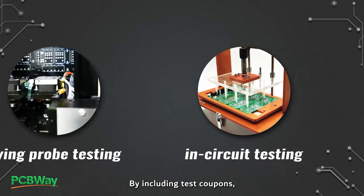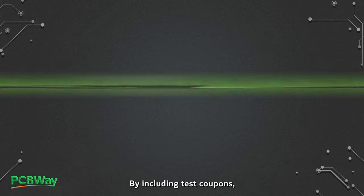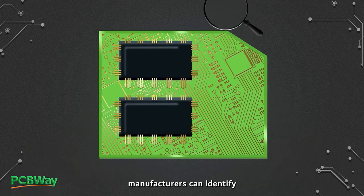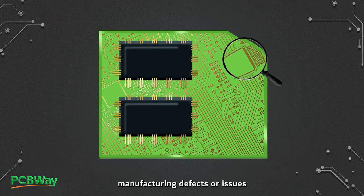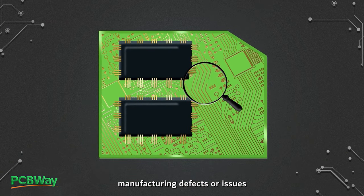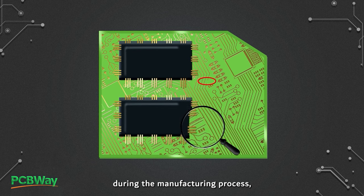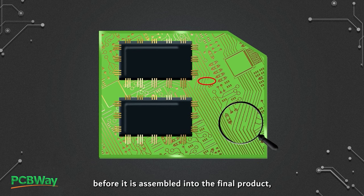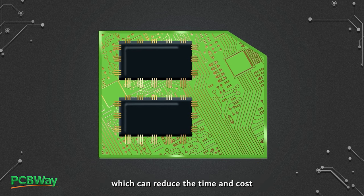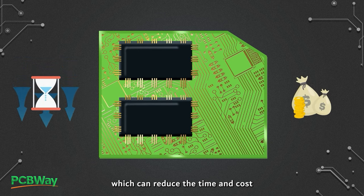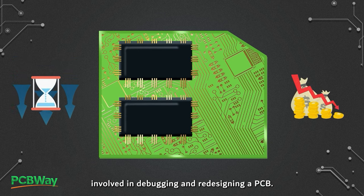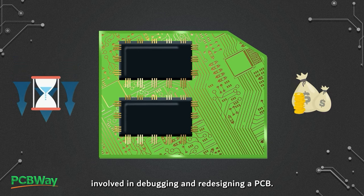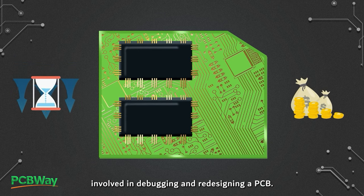By including test coupons, manufacturers can identify manufacturing defects or issues during the manufacturing process, before it is assembled into the final product, which can reduce the time and cost involved in debugging and redesigning a PCB.